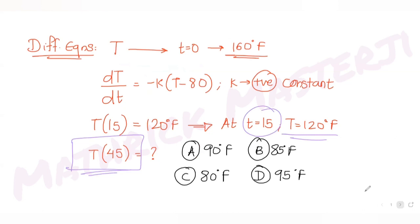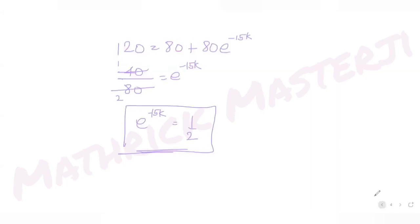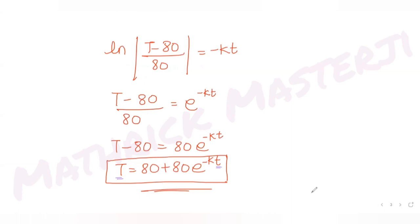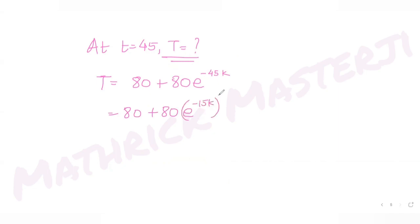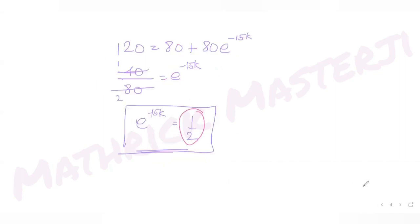The question asks for the temperature at time t equals 45. Substituting into our expression: T equals 80 plus 80 times e raised to minus 45k. I can rewrite the exponent as minus 15k times 3, so this becomes 80 plus 80 times (e raised to minus 15k) cubed.